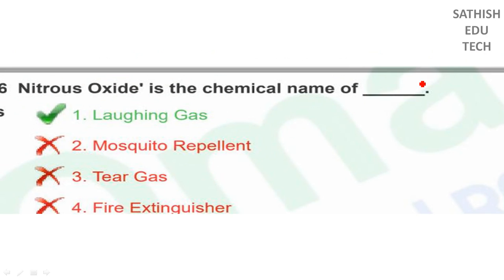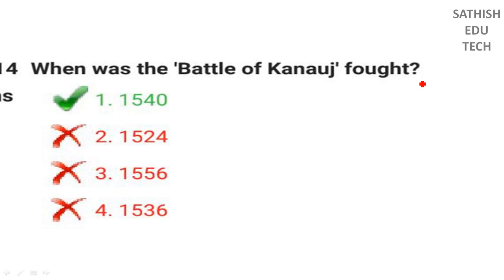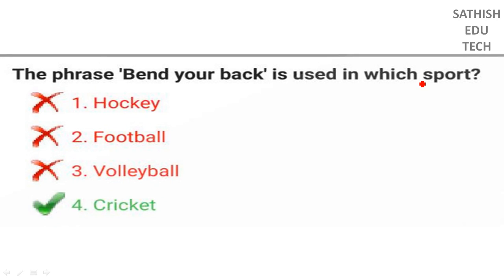Nitrous Oxide is the chemical name of which gas? Next, Battle of Kannauj. In cricket, the equipment includes the ball, bat, wickets, and pitch. DRS is the Decision Review System.